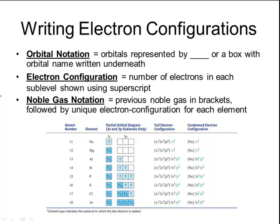And finally, you can write something called a noble gas notation. This is really useful for elements that have a very large number of electrons because it saves you a lot of writing. In order to write the noble gas notation, you need to find out what the noble gas is that comes before the element on the periodic table. And you put that previous noble gas in brackets, and then you follow the brackets by the unique electron configuration for each element.